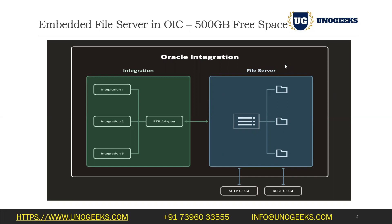Earlier there was no file server option available in OIC, and clients had to rely on public SFTP servers or they used their on-premise SFTP servers. To connect to those on-premise SFTP servers there was a requirement to use connectivity agents, which had its own issues. So what Oracle did, starting with the Generation 2 release, was offer an embedded file server — a file server embedded within the Oracle Integration Cloud instance.